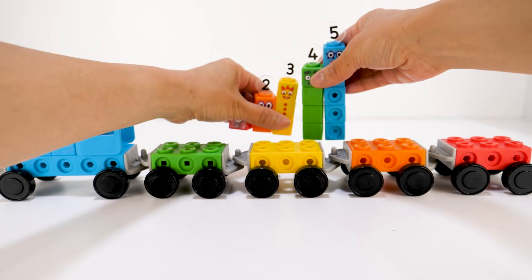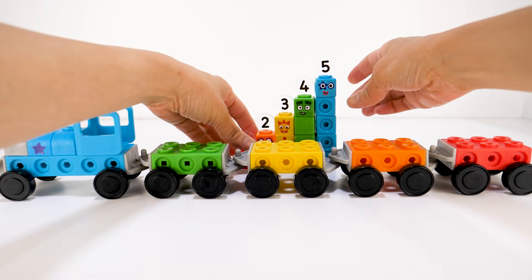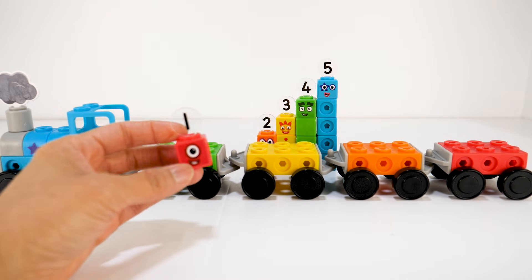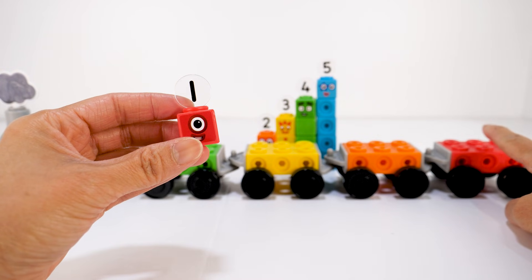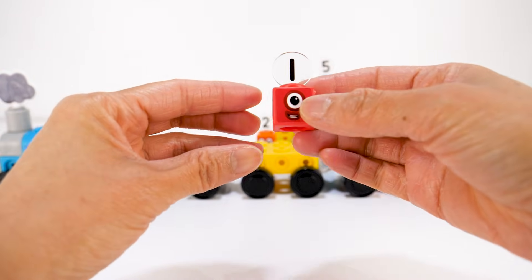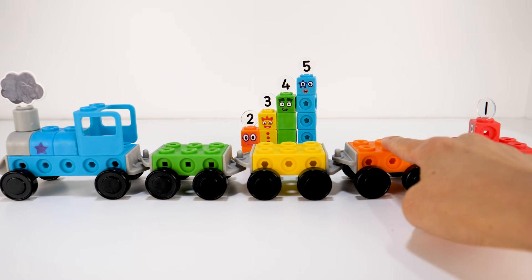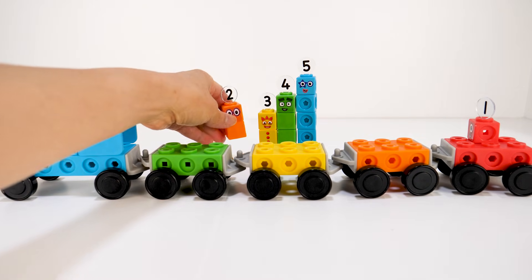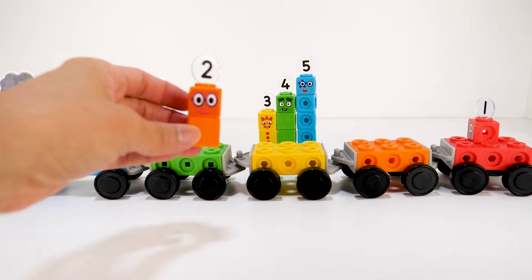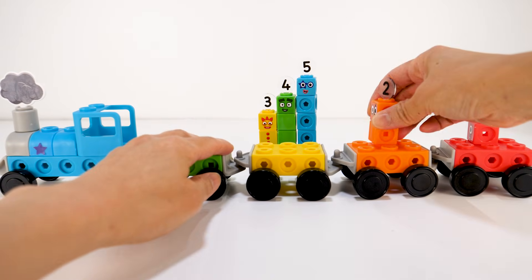Let's help the number blocks find their train cars. Number block one is red, so it goes in the red train car. The second car is orange, and number block two is also orange, so two goes here.